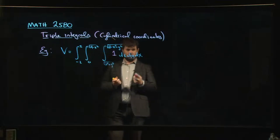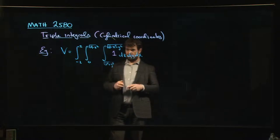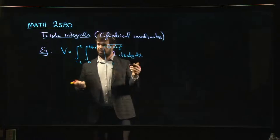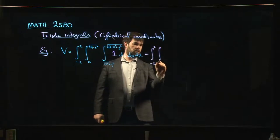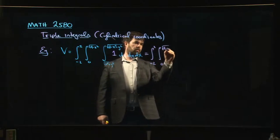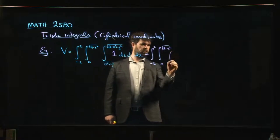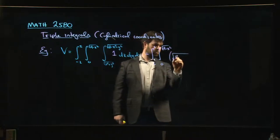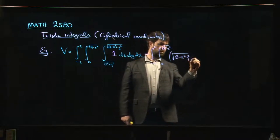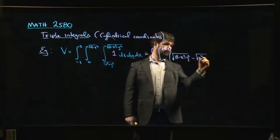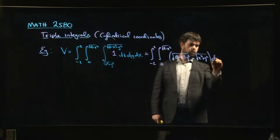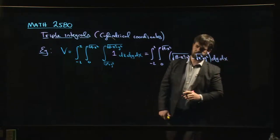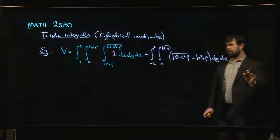So this is the volume. Now one thing we might do, before even bother drawing anything, is realize that we could do the z integral straightaway. So these parts don't change, and so then we have upper limit minus lower limit, and then dy dx.